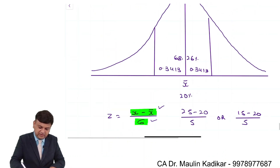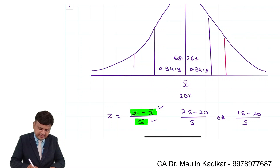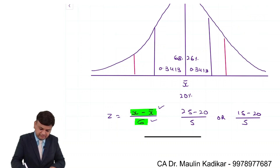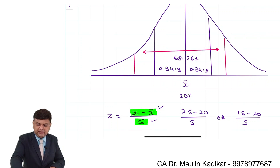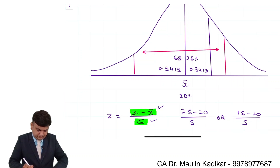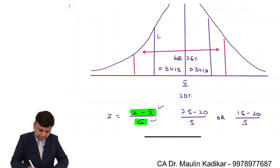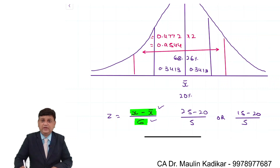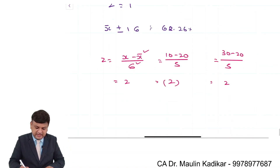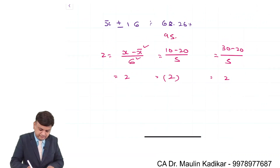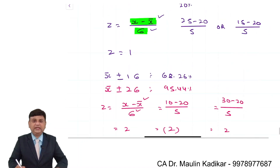What does 0.4772 indicate? This is the area for X̄ ± 2 standard deviations. The total area is 0.4772 × 2 = 0.9544. This means there are 95.44% chances that the actual result will be within X̄ ± 2 standard deviations — that is the range of the actual return with a 95.44% probability.